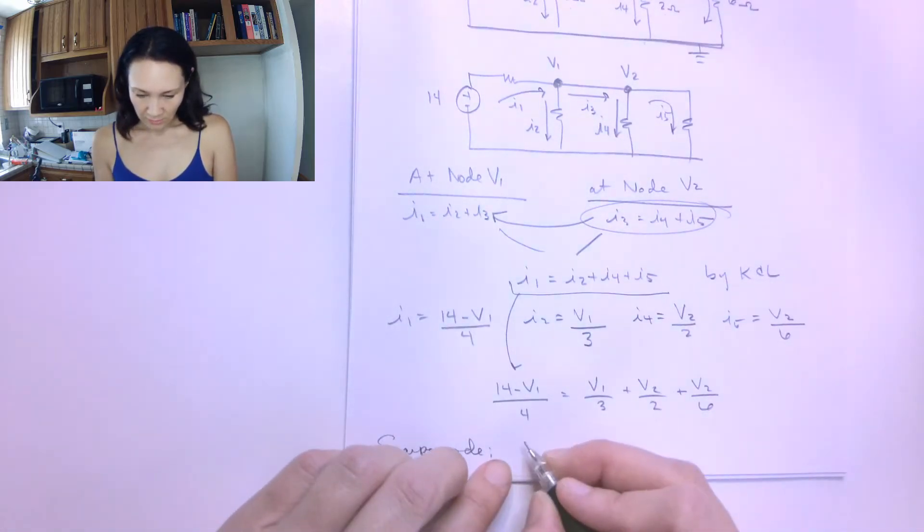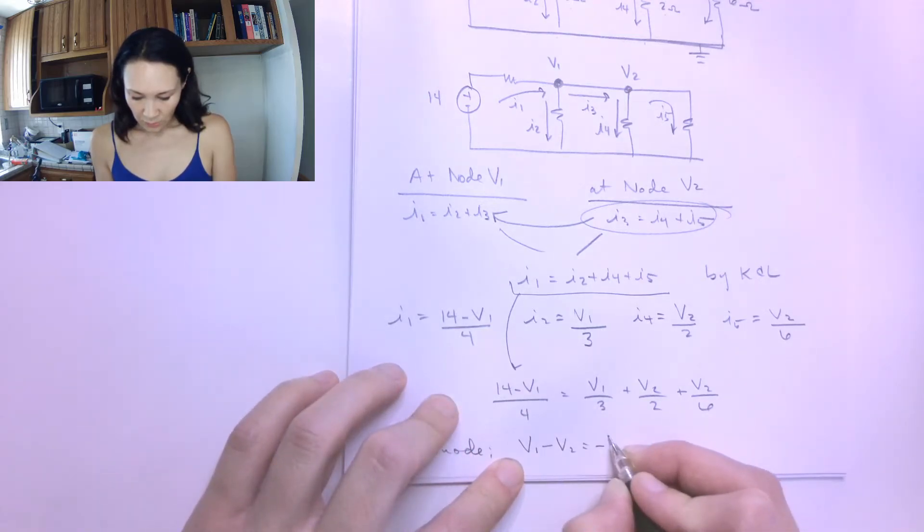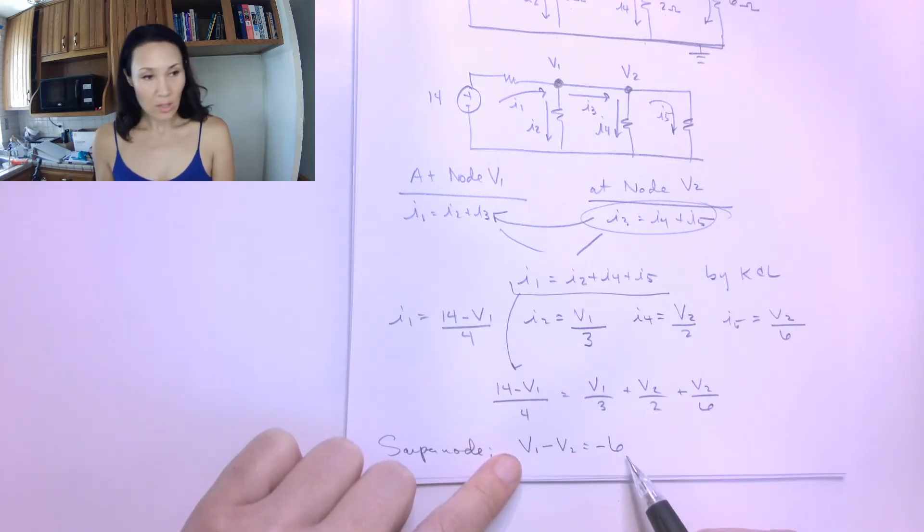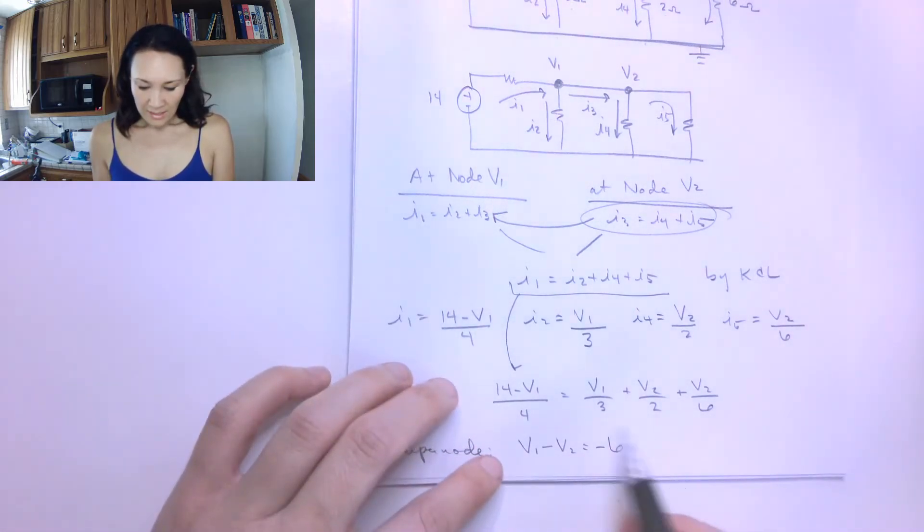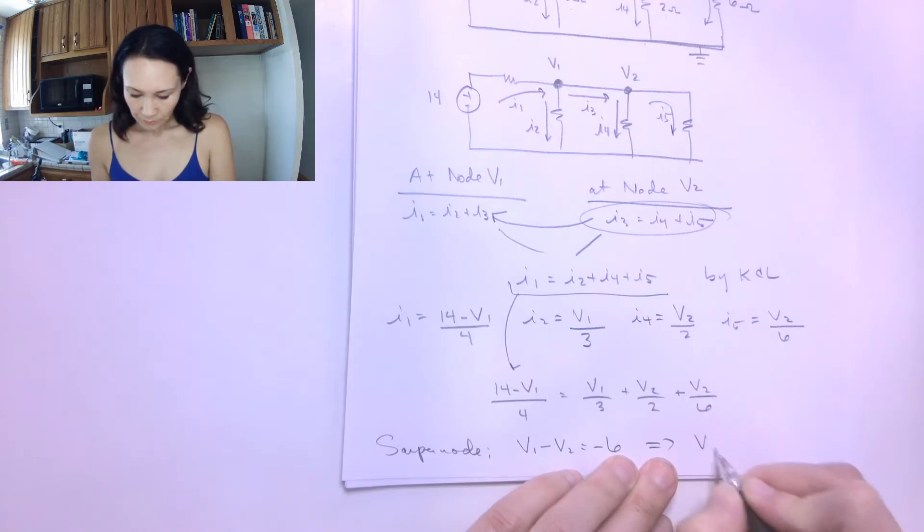But let me write that here. This is going to be V1 minus V2 is equal to negative 6. Now this gives me my second equation so that I can solve a system of equations with two unknowns. So now I can take this thing. This implies that V1 is equal to V2 minus 6.